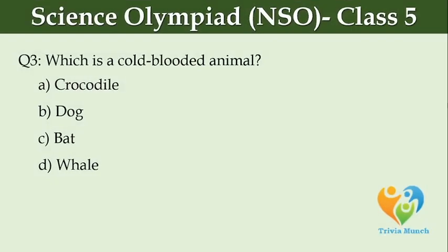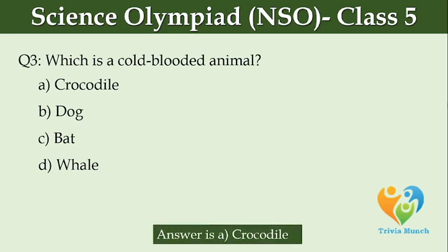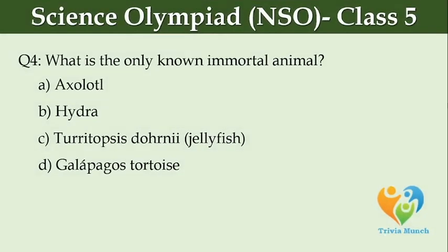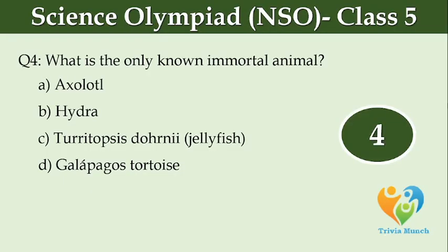Which is a cold-blooded animal? Option A, crocodile. Option B, dog. Option C, bat. Option D, whale. What is the only known immortal animal? Option A, axolotl. Option B, hydra. Option C, Turritopsis dohrnii. Option D, Galapagos tortoise.